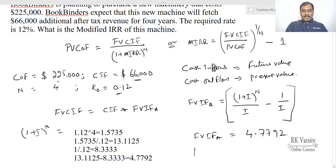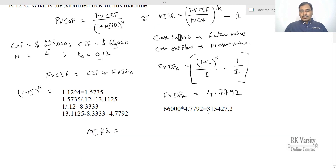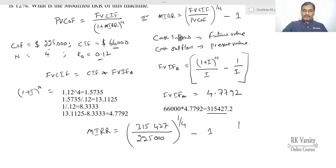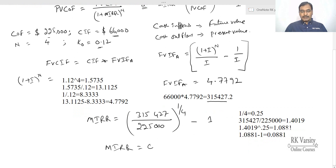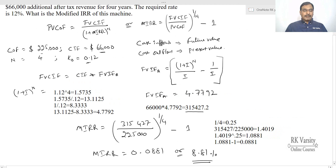The future value of cash inflows is $66,000 times 4.7792, which equals $315,427. Then MIRR equals (315,427 / 225,000) raised to the power of (1/4) minus 1. First, 1/4 = 0.25. Then 1.4019 raised to the power of 0.25 equals 1.0881. Minus 1 gives MIRR = 0.0881, or 8.81%. This is how we calculate the modified IRR of a project.